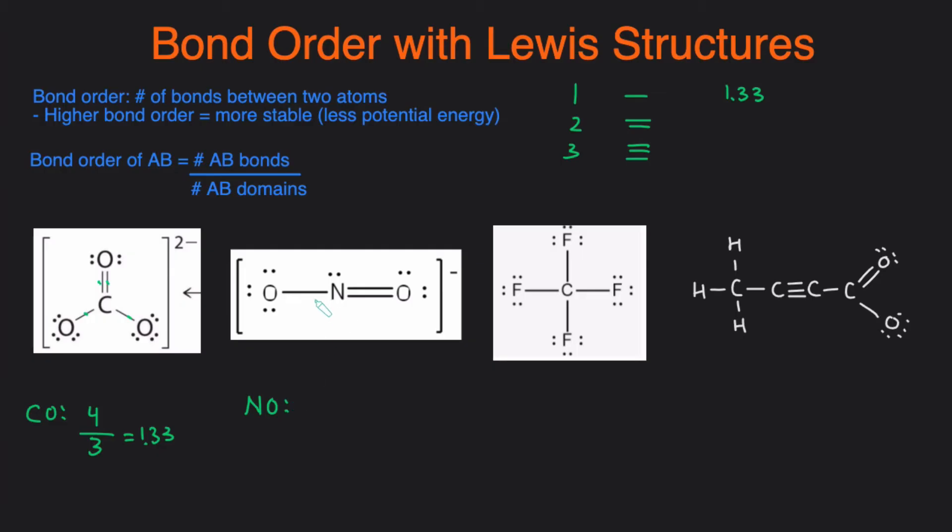So to calculate the bond order is going to be the number of NO bonds, which is one, two, three, divided by the NO domains. So one NO and then another NO. So three divided by two, which is 1.5. So that means each of these bonds are one and a half bond instead of a single bond and a double bond.